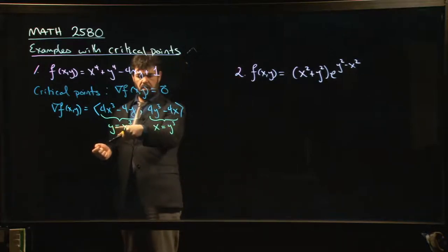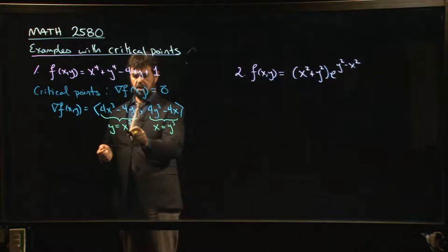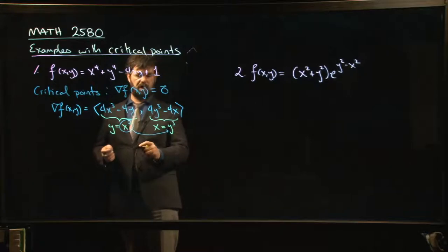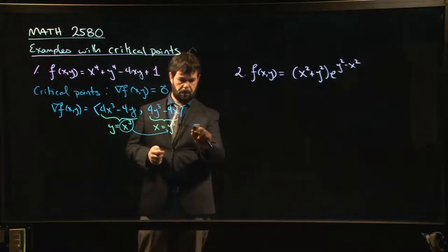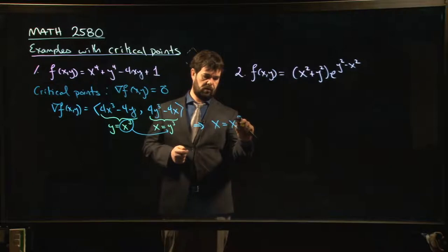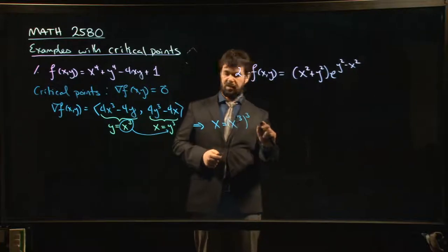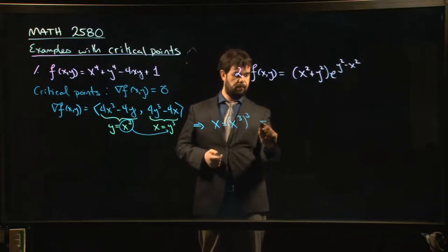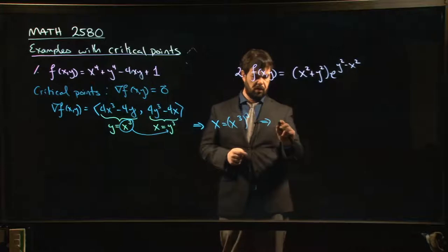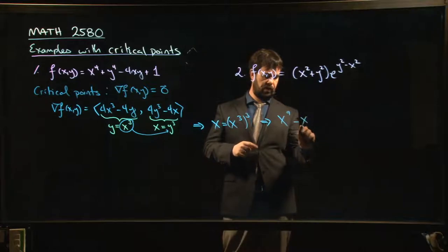Over here we know that y is equal to x³. We can do a substitution - let's take y equals x³ and plug that in for x over there. If we do that, then what we're going to get is that x is equal to x³ cubed. If I rearrange things, x³ cubed is x to the ninth. Let's bring the x over to the other side: x⁹ - x should be zero.